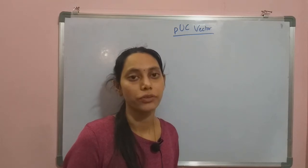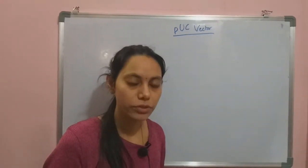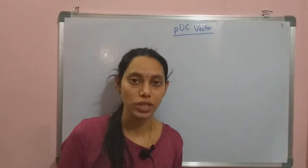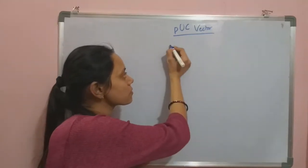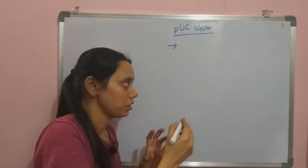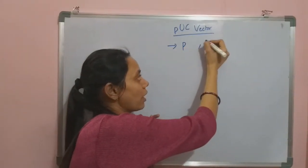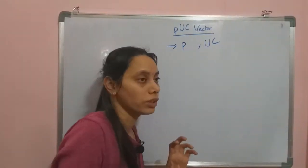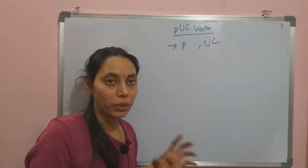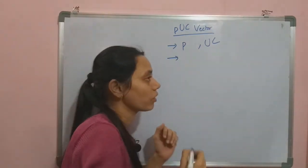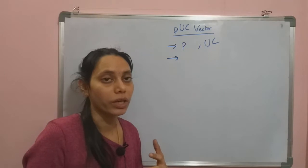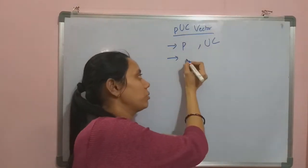Welcome to Biology for You. In this video we are going to discuss PUC vector, in the series of videos discussing different processes in genetic engineering. PUC vector is basically a plasmid vector. Here P stands for plasmid and UC stands for the University of California, the place in which this PUC vector was made. It is one of the most advanced plasmid vectors.